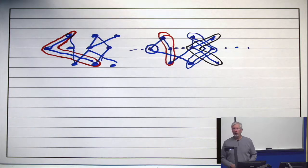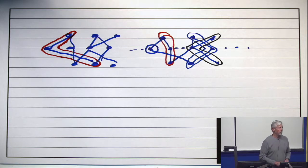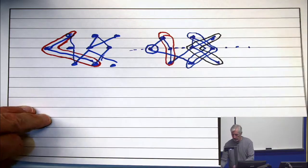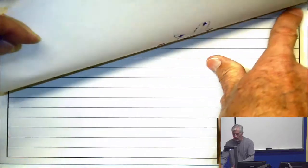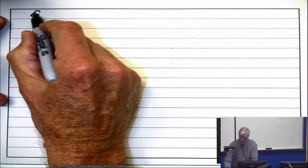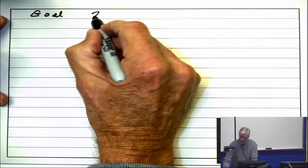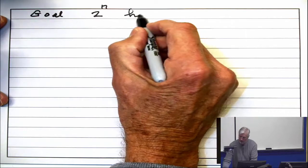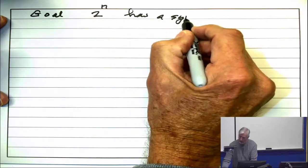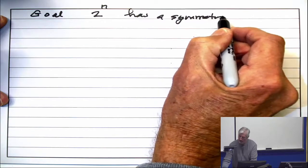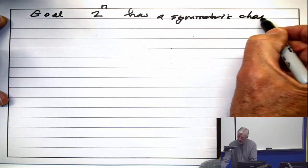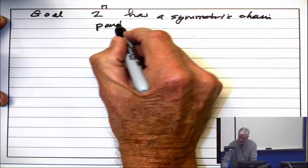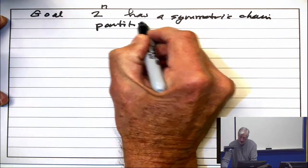But what we're going to show is that the subset lattice has a symmetric chain partition. And we're going to do it in a slightly more general setting. So let me just write on this slide, our goal is to show that 2 to the n has a symmetric chain partition. That's what we're going to do.